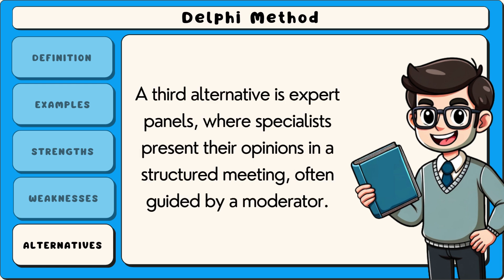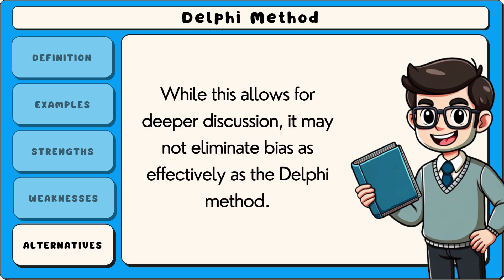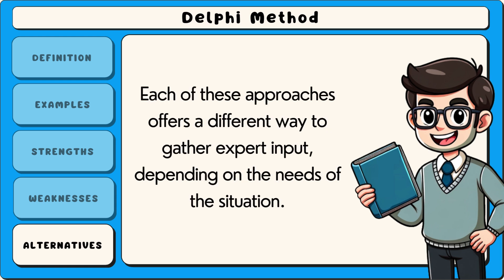A third alternative is expert panels, where specialists present their opinions in a structured meeting, often guided by a moderator. While this allows for deeper discussion, it may not eliminate bias as effectively as the Delphi method. Each of these approaches offers a different way to gather expert input, depending on the needs of the situation.